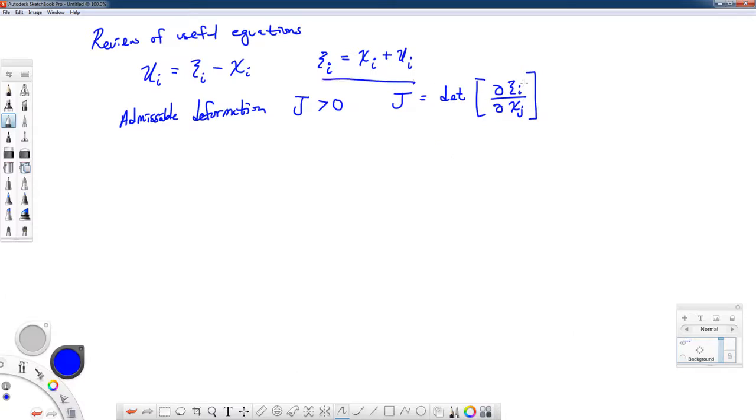Based on what we have written here we can also write this in terms of displacements, and this is where I said we have to be very careful when we write the Jacobian in terms of displacements. We have to make sure that we also include the Kronecker delta term: delta ij plus partial of ui with respect to xj, or with the common notation ui comma j.